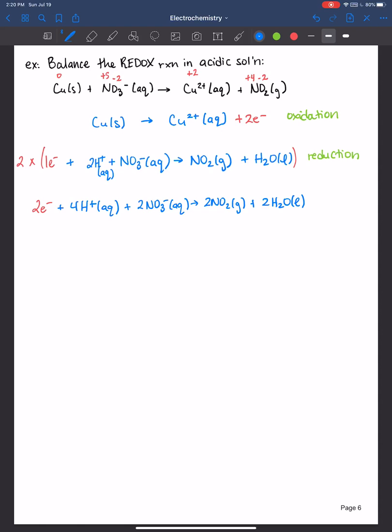So now we are balanced by mass for both half reactions, we're balanced by charge. Now we want to add them up together.